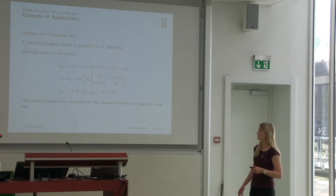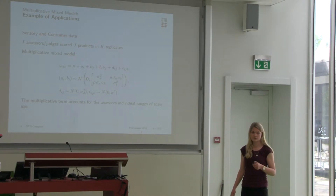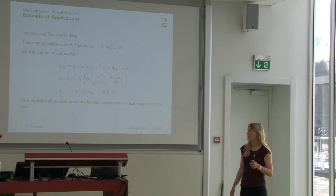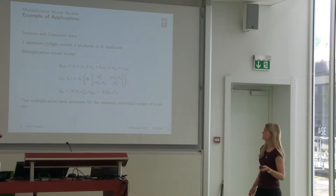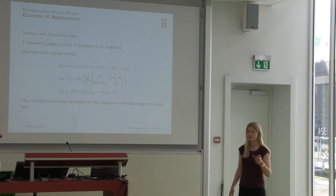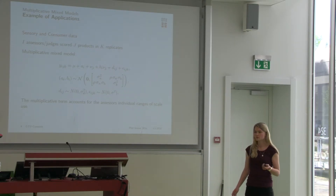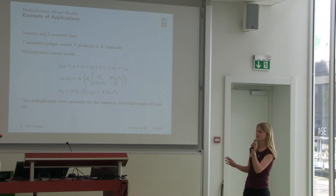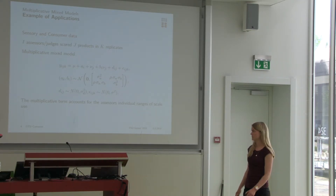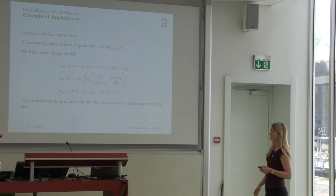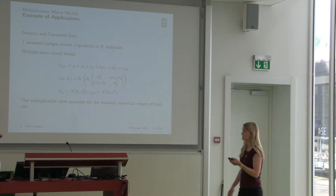Another situation where we can use this model is in the field of sensory science that Federica just talked about. We have assessors or judges that score different products across replicates. It can be food, for instance cheese, as Federica talked about. It can also be televisions, for instance, that different assessors are looking at and then judging how bright or how clear the picture is. This is the data I will look at in one minute.